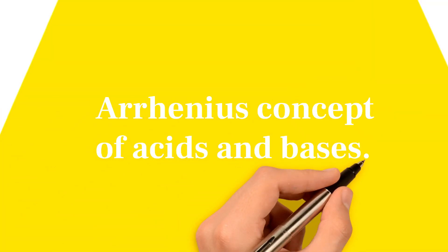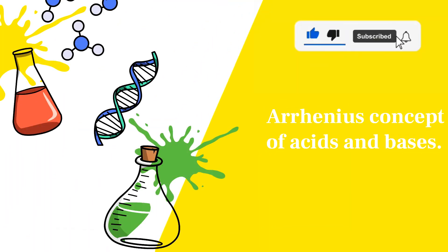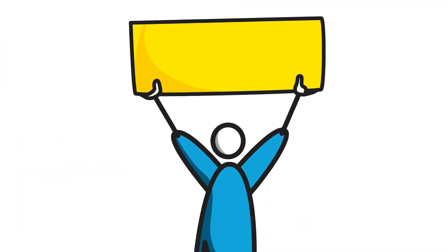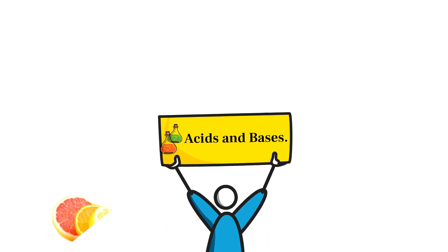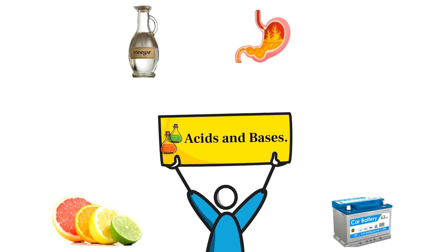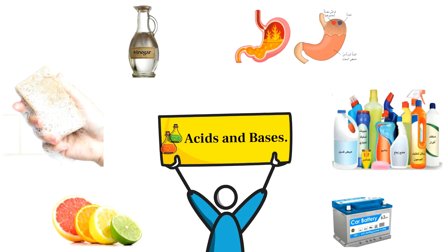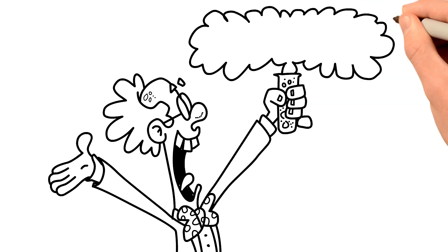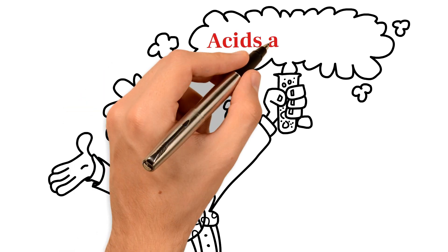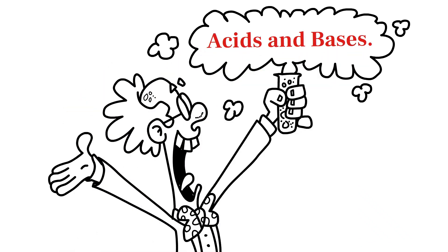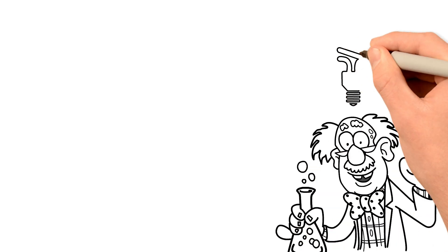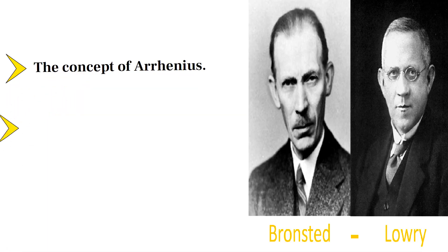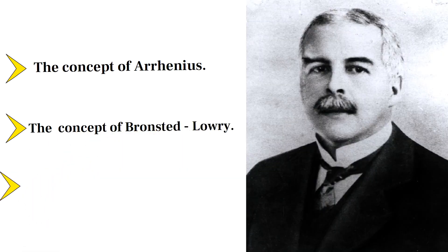Arrhenius concept of acids and bases. In the previous videos on acids and bases, we got acquainted with the general qualities of each of them and their multiple applications in our life. Due to the importance of acids and bases, scientists have been interested in studying them, and several definitions have appeared to explain their chemical behaviors. The most important concepts are the concept of Arrhenius, the concept of Bronsted-Lowry, and the concept of Lewis.